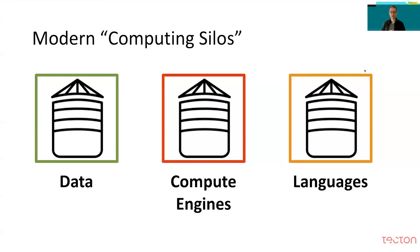This talk is specifically about different aspects of what I call computing silos that have developed in different parts of our infrastructure. The three kinds I want to focus on are: data silos — how data is stored, accessed, and flows around our systems; computing engines — systems that access data, compute queries, perform ETL, feature engineering, machine learning, and AI; and programming languages and language interfaces, which are the only way we can access these systems.